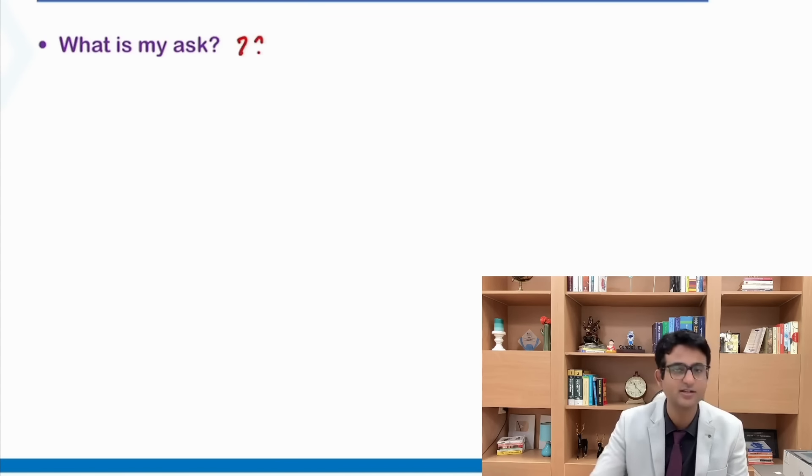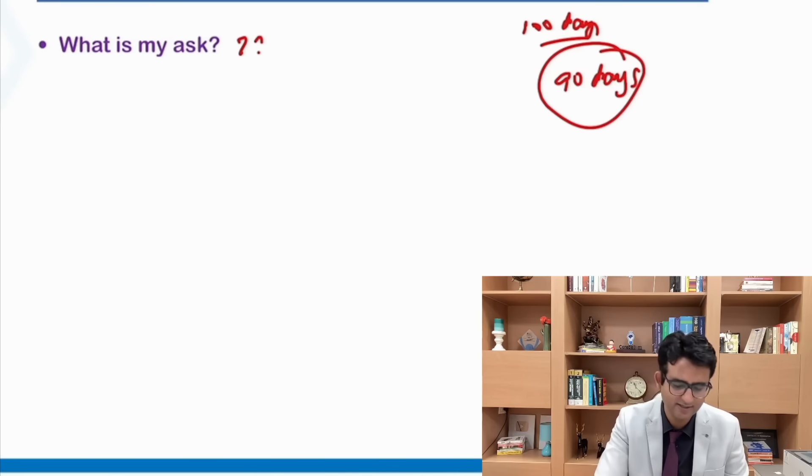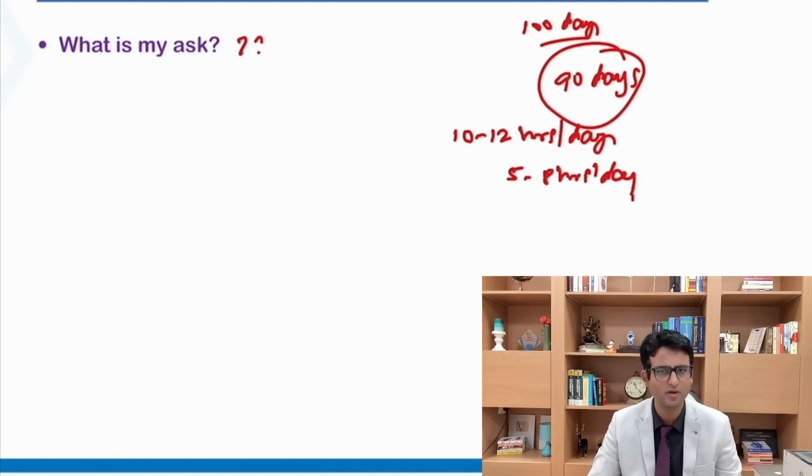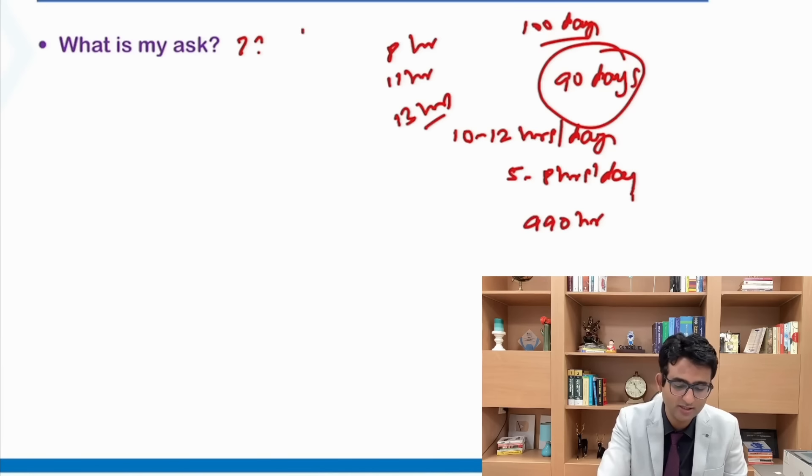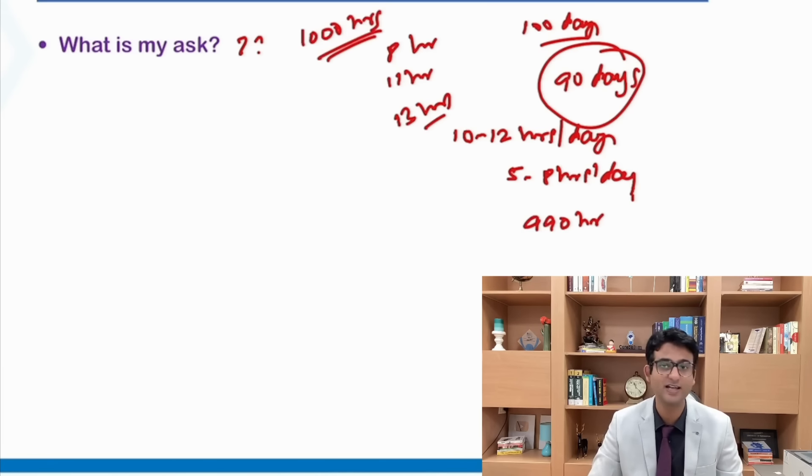What is my ask? My ask is very simple. We are around 100 days from the examination. I would advise that you take a break every 10th or 11th day. So we are left with around 90 days of study time. In these 90 days, you have to routinely clock 10 to 12 hours a day. If you are an intern, make it 5 to 8 hours a day. We have got like 1000 hours of study time. And when I say 1000 hours of study time, it means 1000 hours of study time. You should be using every single minute.